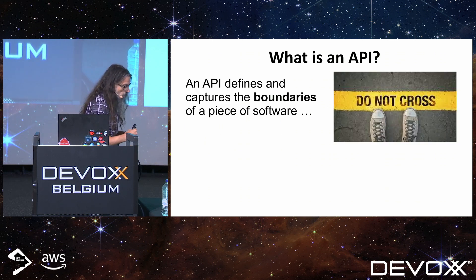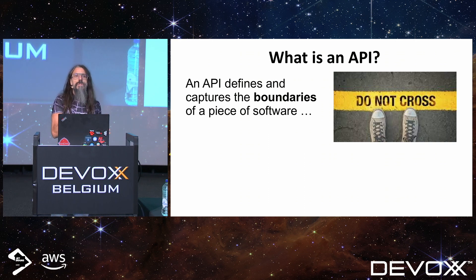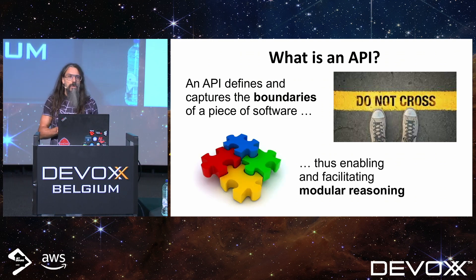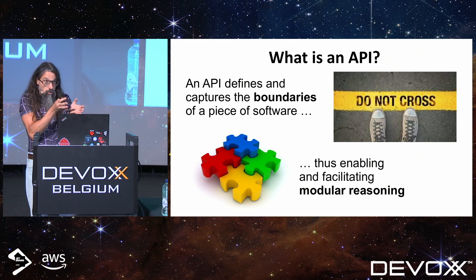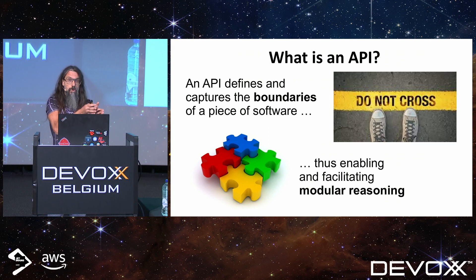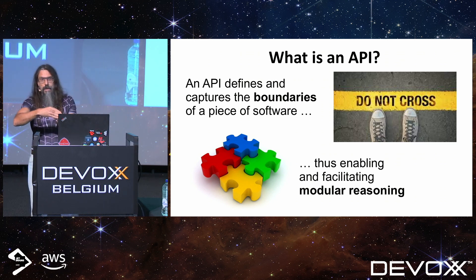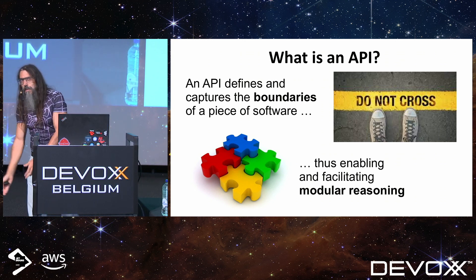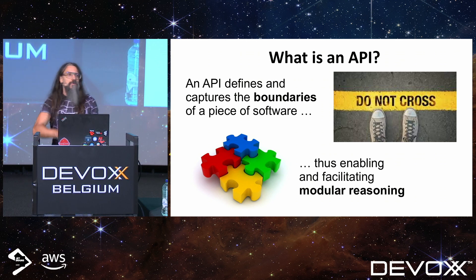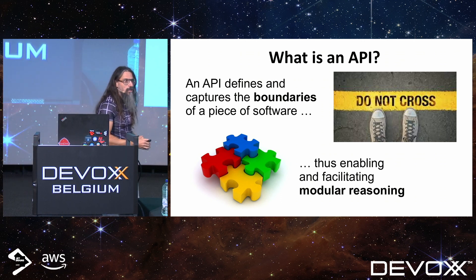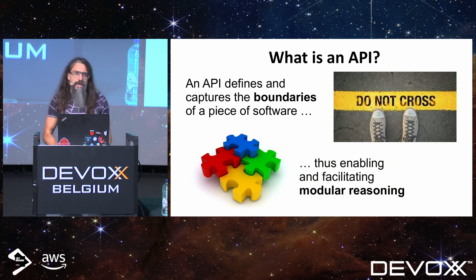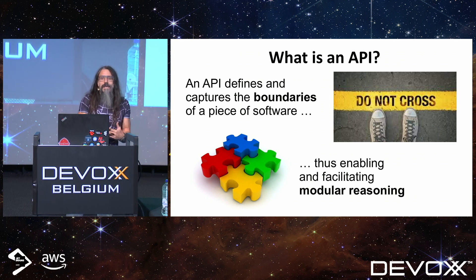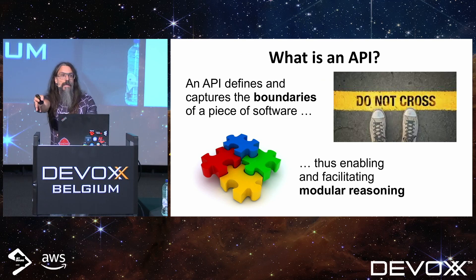An API also works to define a boundary between two different pieces of software. This is very important because our stuff is really complex and we need to modularize things, to think in modules. You care about your stuff and trust that on the other side it's working as expected, using the part behind the API as a black box. Generally, you use the API as a black box and everything behind it is totally encapsulated.